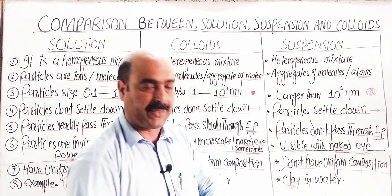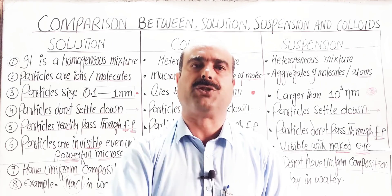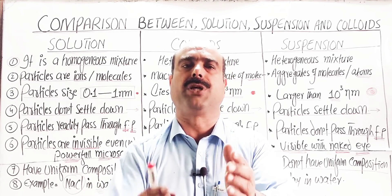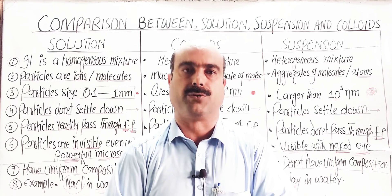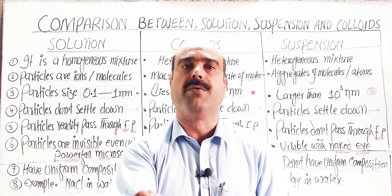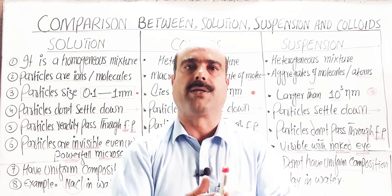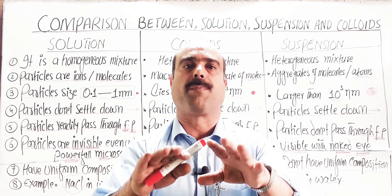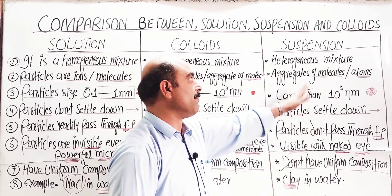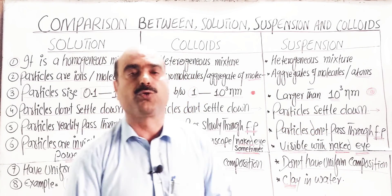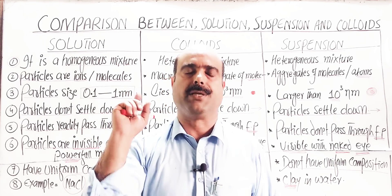Examples of suspensions include finely divided clay in water, and meat in water. In suspension, when the mixture is left undisturbed for some time, the particles settle down. This is the main property of suspension. So students, these were all about the comparison between solution, suspension, and colloids. Take a screenshot of it.